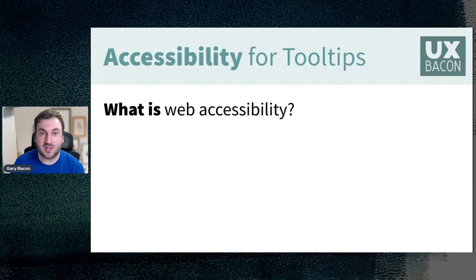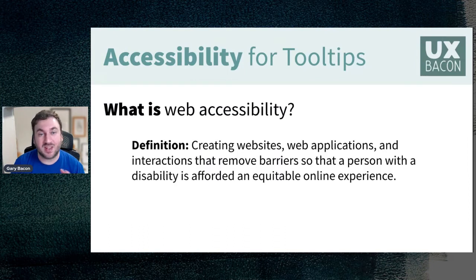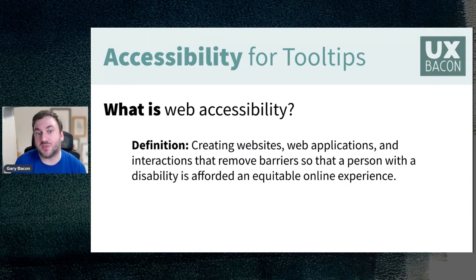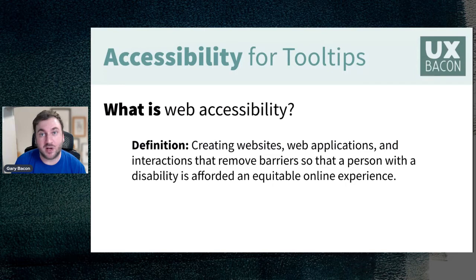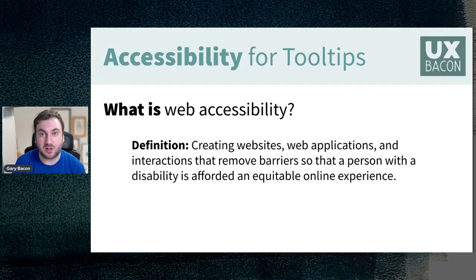What is web accessibility? The technical definition is creating websites, web applications, and interactions that remove barriers so that a person with a disability is afforded an equitable online experience — their experience is as good as everybody else's. By covering a lot of those concerns, we end up reaching a wider audience and providing a better user experience.